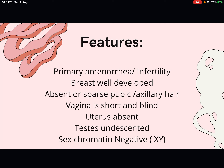Sex chromatin is a key term to remember. Sex chromatin material is found only in the nuclei of female cells and represents the inactivated X chromosome. Normally, females have an XX karyotype, so the second inactivated X chromosome makes sex chromatin positive. In androgen insensitivity syndrome, the karyotype is XY, so there is no inactivated X chromosome, making sex chromatin negative.